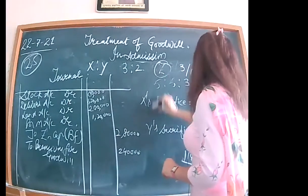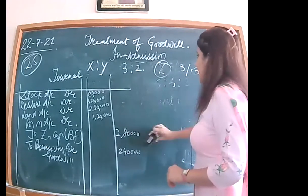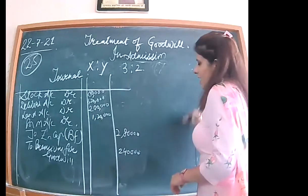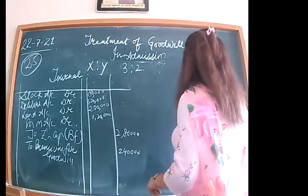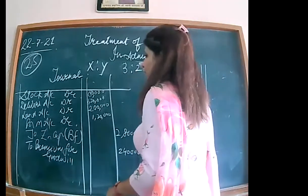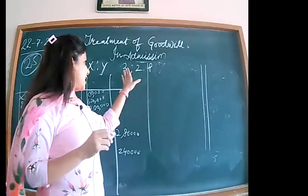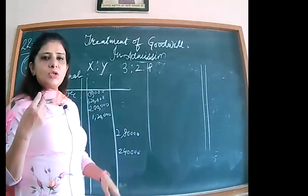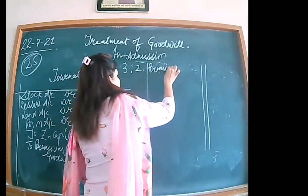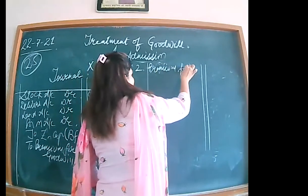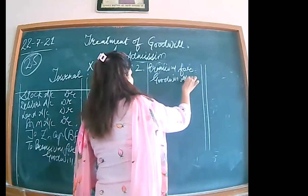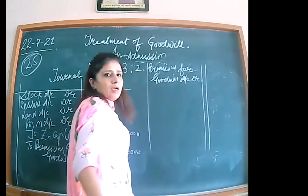Whenever the premium for goodwill comes to us, we divide it between the old partners — the sacrificing partners — in their sacrificing ratio. This is the second entry: premium for goodwill account debited to X's capital and to Y's capital in the ratio of 14 is to 1.